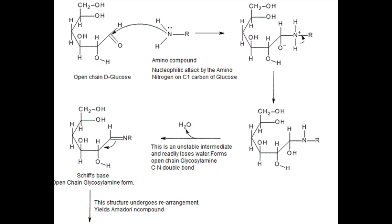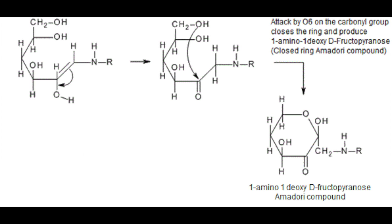The first step of the Maillard reaction is the reaction of a reducing sugar — in this case glucose — with an amino acid. The carbonyl group of the glucose reacts with the amino group of the amino compound, producing N-substituted glycosylamine and water. The glycosylamine is an unstable intermediate and so readily loses water. The product undergoes rearrangement and then ring closing to form the Amadori compound, 1-amino-1-deoxy-D-fructopyranose.